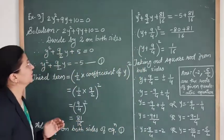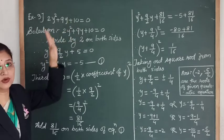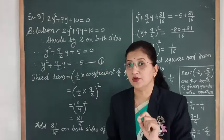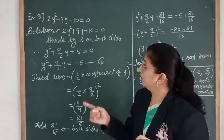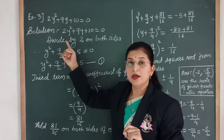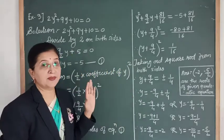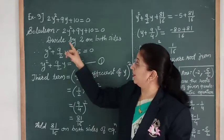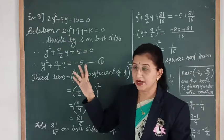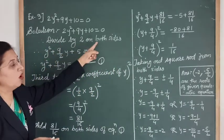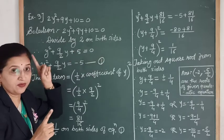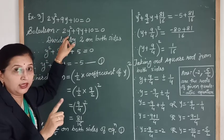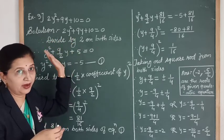Here we have another equation: 2y² + 9y + 10 = 0. In the previous equations, the coefficient of x² was 1. But here the coefficient of y² is 2. Whenever we apply the completing square method, we must ensure that the coefficient of x² or y² is 1. Since it is 2 here, we first divide both sides by 2. This gives us y² + (9/2)y + 5 = 0.